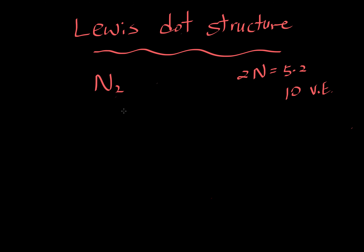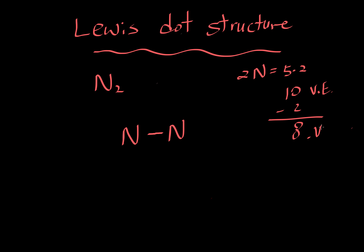They're connected, so let's draw two N's connected with one line. One line represents a bond, and one line means you have two electrons in it. So whenever you see a line connecting two atoms, imagine there are two electrons there. We have just used two electrons, so I'm going to subtract two from 10 total available. Now I have eight valence electrons to work with.